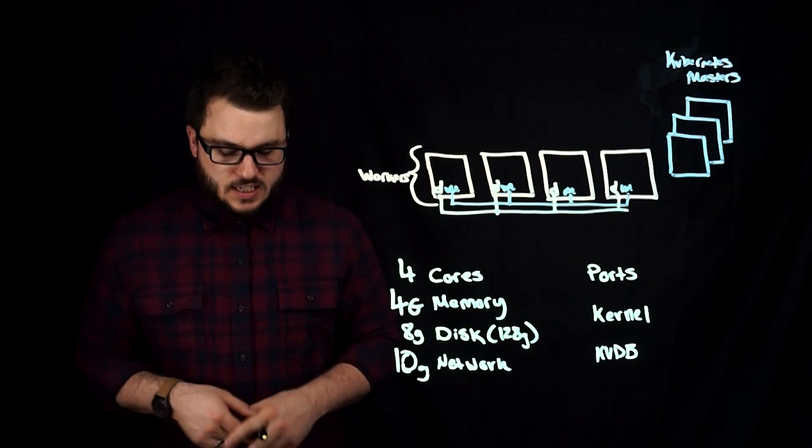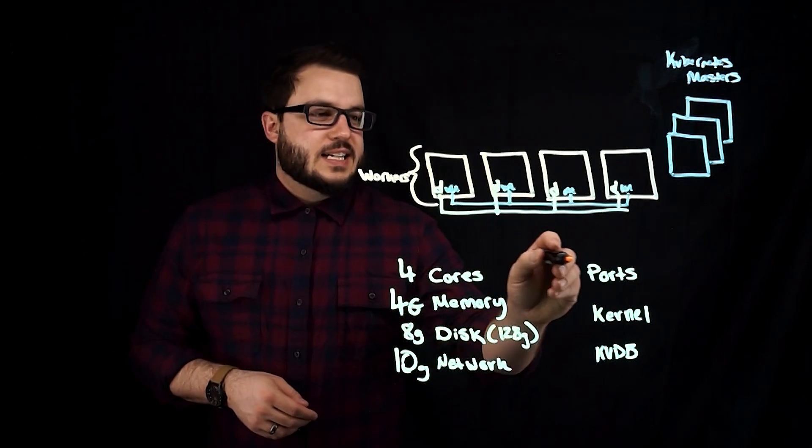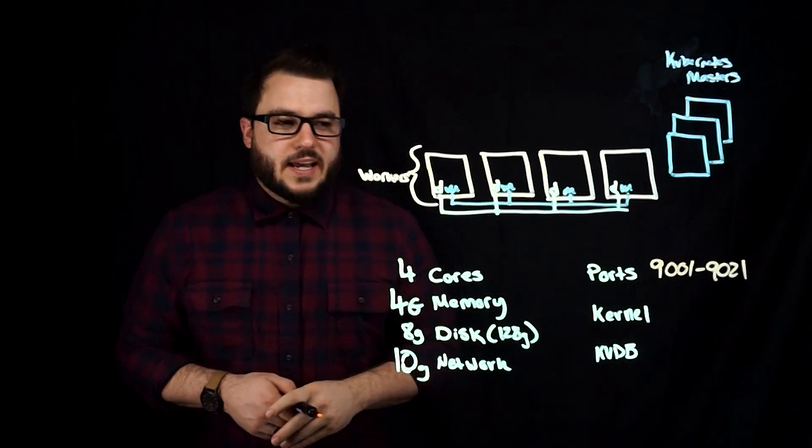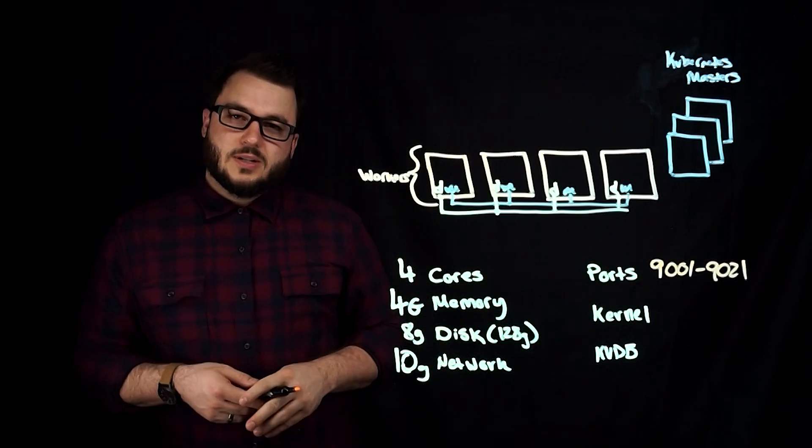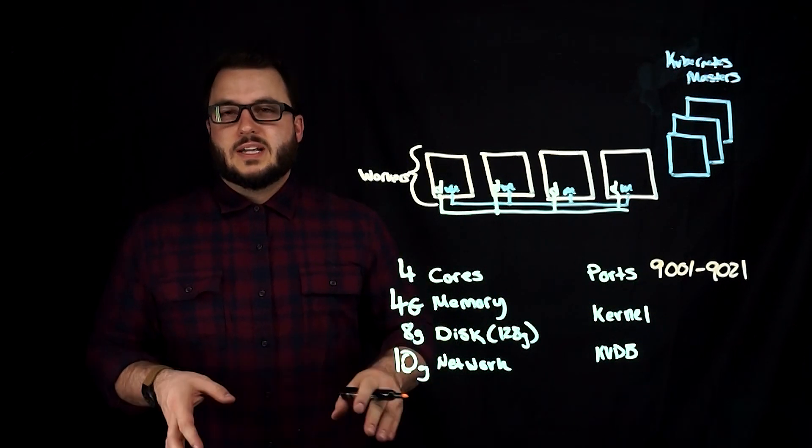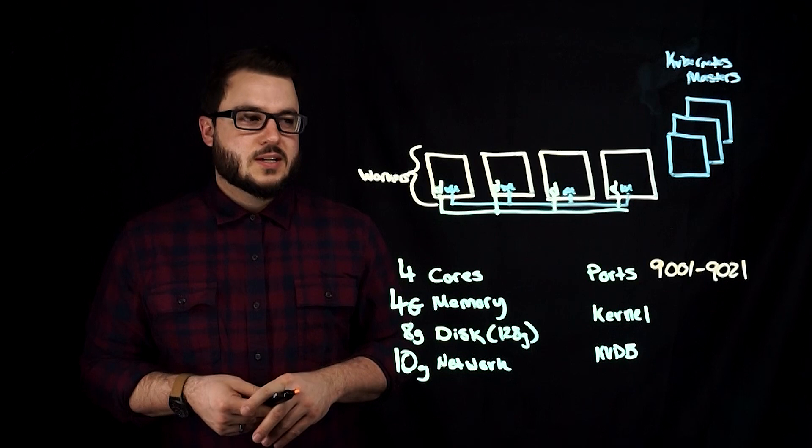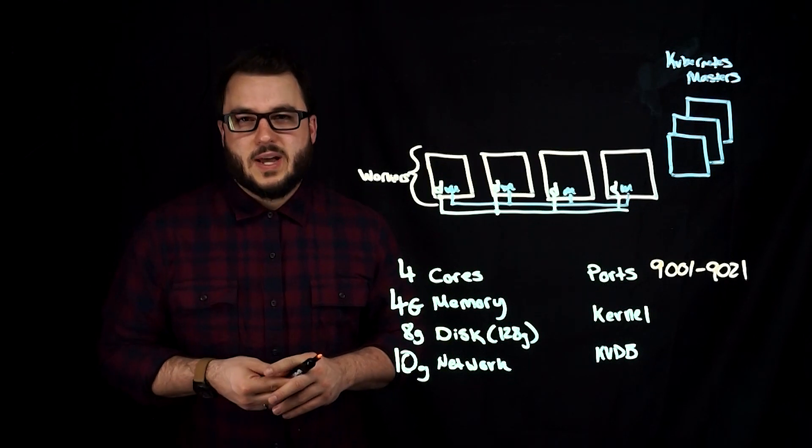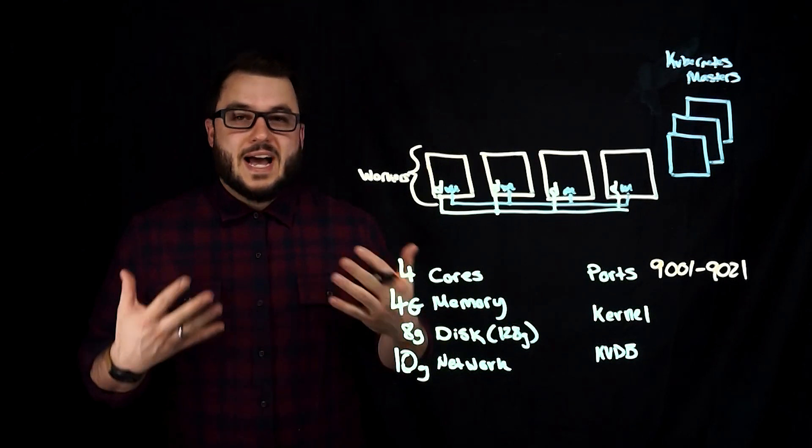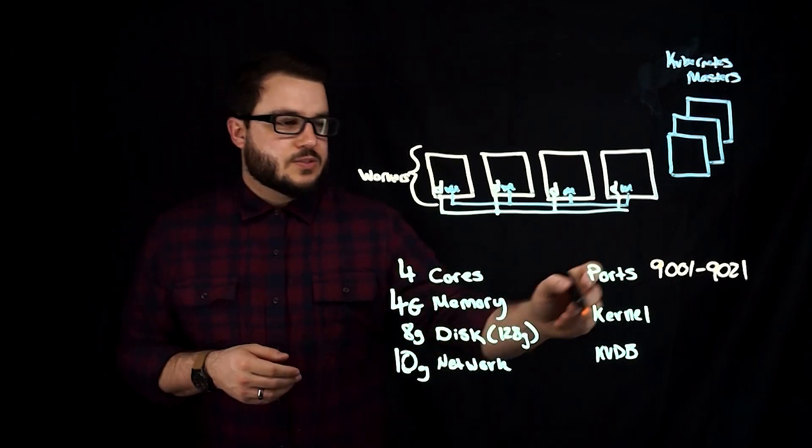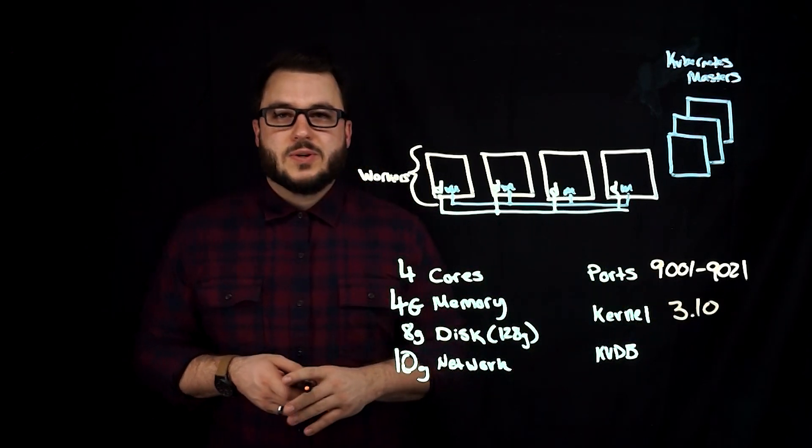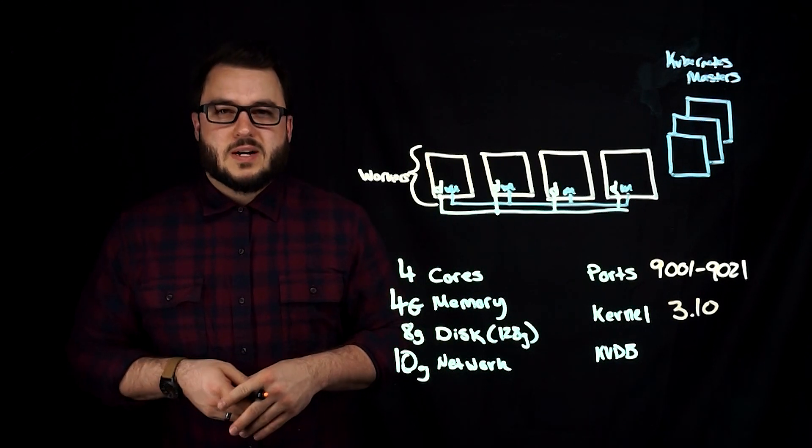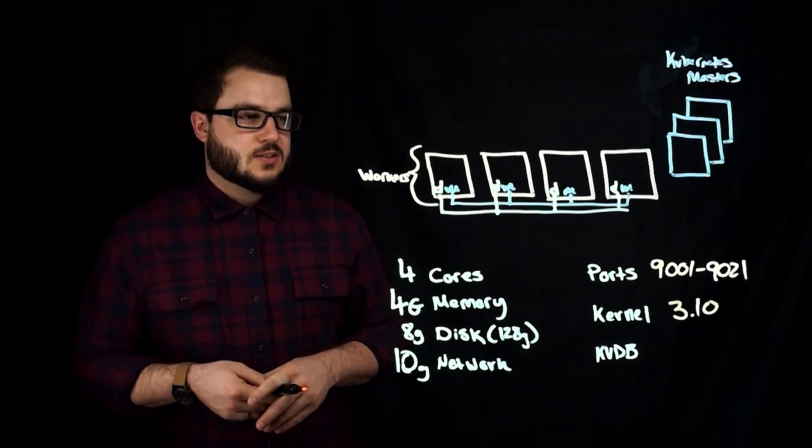The ports needed for Portworx, we're going to need 9001 through 9021. This range is configurable. This is the default range, unless you have overlapping port conflicts. There's really no need to change that, as this is a standard way that Portworx communicates. Kernel version, you want at least 3.10 for your Linux operating system distribution, just because we use a lot of the modern Linux kernel integration and workflows.